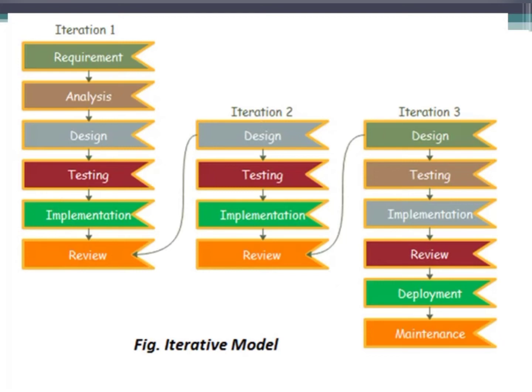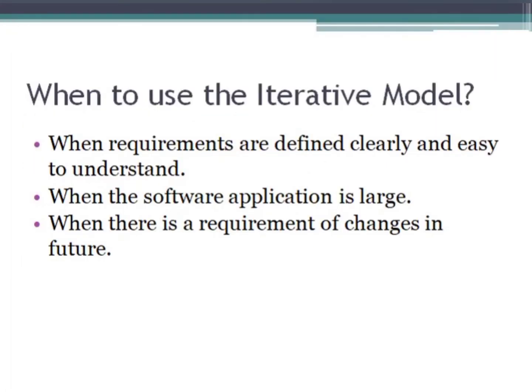Now, when and where do we use the iterative model? The first case is when the software application is very large. If you are using multiple iterations, the benefit is realized only when the software size is very large. If the software is small in size, then multiple iterations will only increase your budget. So this model is suitable only for large applications.